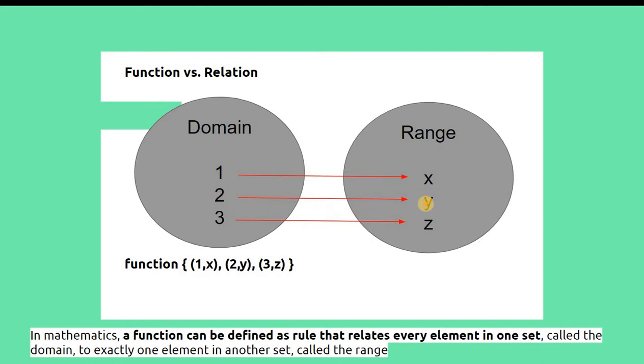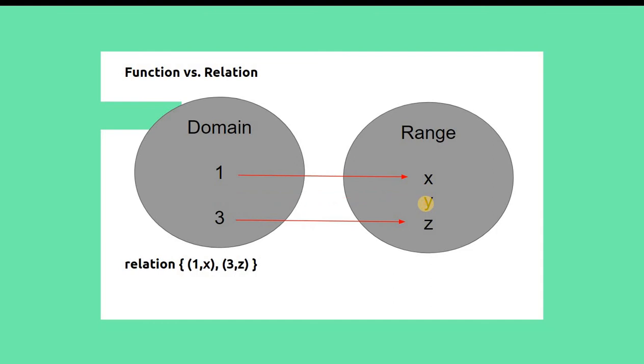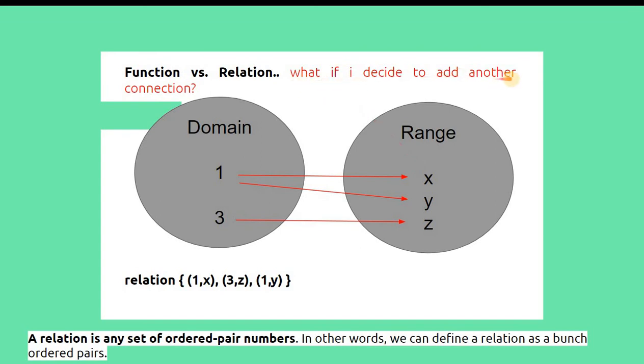Now we understand function better when we see relation. Let me show you relation. I have used the same example. What I did is just leave one equals x and three equals z. Again, this should be a function, because we fulfilled the requirement: each element in the domain must have a relationship with one variable in the range. However, what if I decided to add another connection? One equals x, and I added another rule—one can also be y. So it has two corresponding values: one is to x and one equals y, and then you have three equals z.